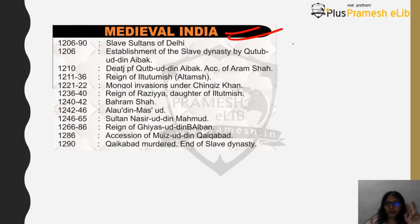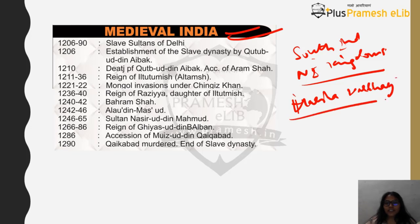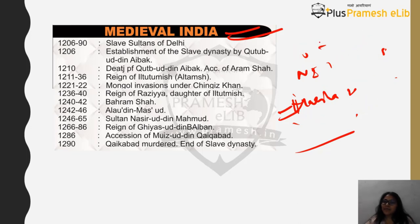We already ended with South Indian kingdoms and North Indian kingdoms. The last major ruler in the North Indian Empire was Harsha of the Harshvardhan Empire, also called the Pushyabhuti dynasty. In southern India we discussed the Pallavas and Chalukyas. Now we will start with medieval India, which is generally that time when you find a lot of invasions happening from the northwestern side of India.